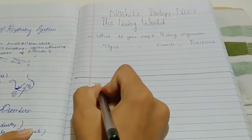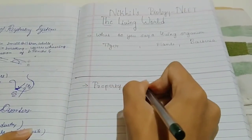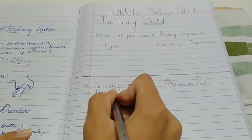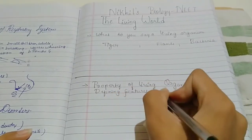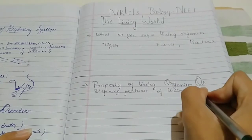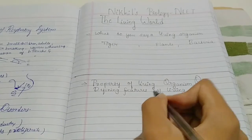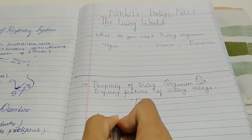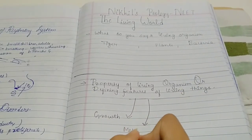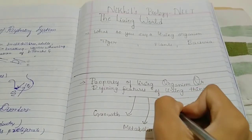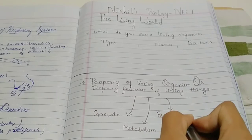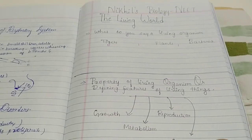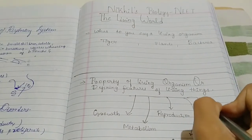So, let's look at the first point in this chapter: the properties of living organisms. Properties of living organisms are the defining features of living things. There are five properties. We will study them in detail. First property: growth. Second property: metabolism. Third property: reproduction. Fourth property: cellular organization. Fifth defining property: consciousness.